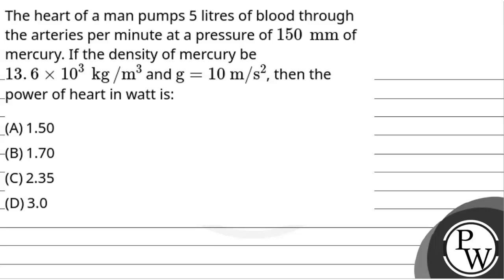Hello, let's see the question. The question says that the heart of a man pumps 5 liters of blood through the arteries per minute at a pressure of 150 mm of mercury. If the density of mercury is 13.6 × 10³ kg per meter cube and g is equal to 10 meter per second square, then find the power of the heart in watts.